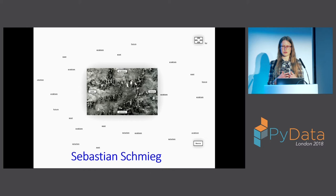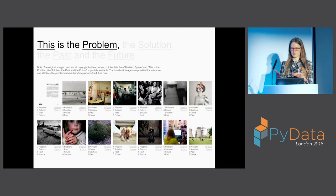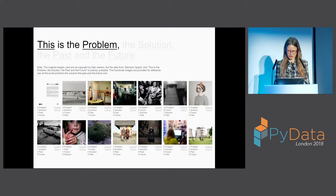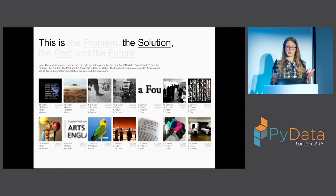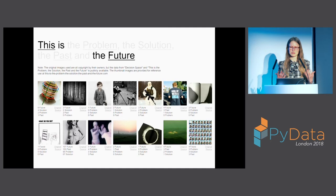There is work by Sebastian Schmeig that looks at how you classify images into various categories including past, future, problem, and solution. Images noted by website visitors as belonging to the problem category include children and nuclear power stations. For the solution, you have parrots and Arts Council England. If you think about the past, you have ice cream, trees, and sofas. And for the future, you have children, people with guns, and logo t-shirts.